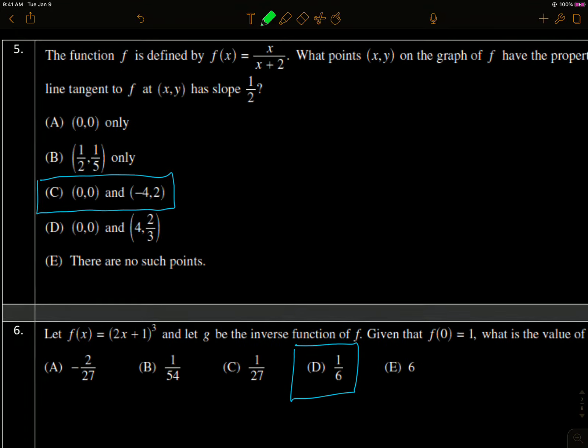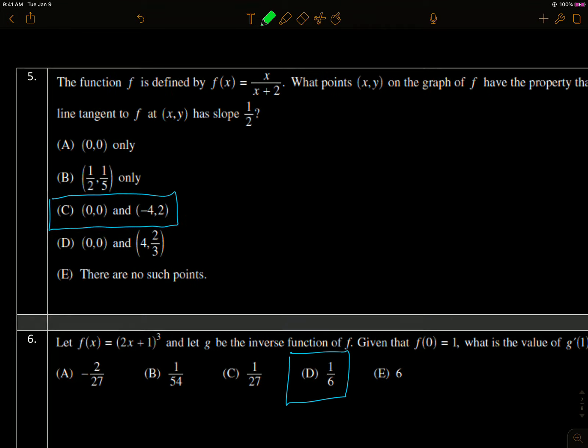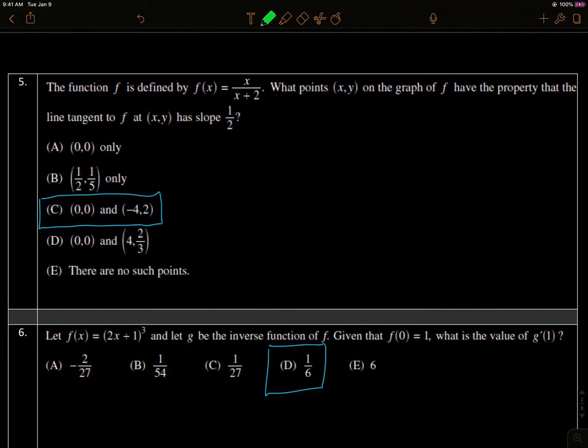Number 5, we're given a function. What points on the graph have the property that the tangent line to f has a slope of 1 half? So we're talking about a slope of a tangent line. The slope equals 1 half.